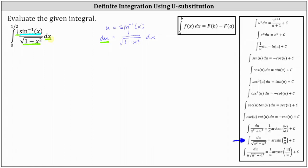Before writing the integral with respect to u, we need to remember the limits of integration from zero to one half are x values, not u values. Therefore, we will temporarily leave the limits of integration off. So again, one divided by the square root of the quantity one minus x squared dx is equal to du, and since u is equal to inverse sine of x, the integrated function is just u.